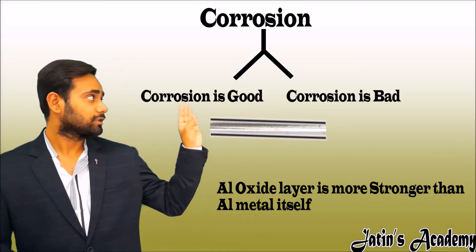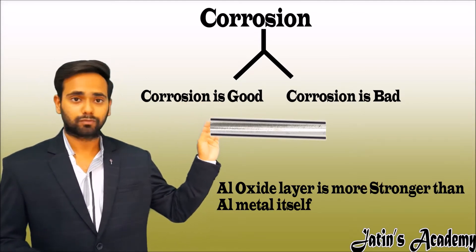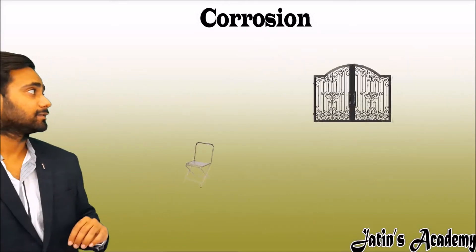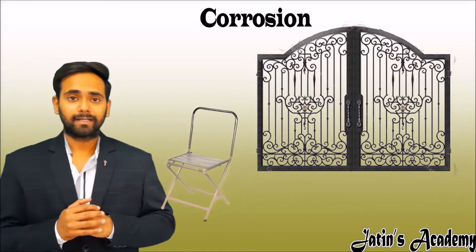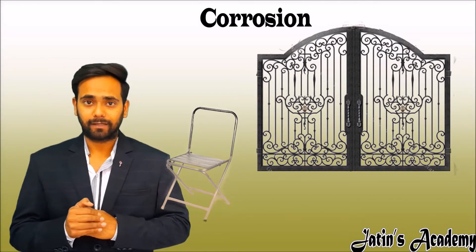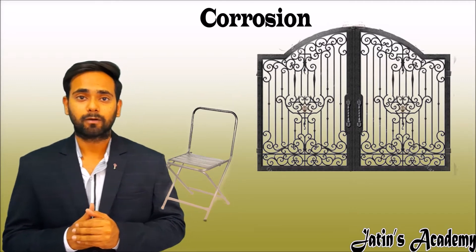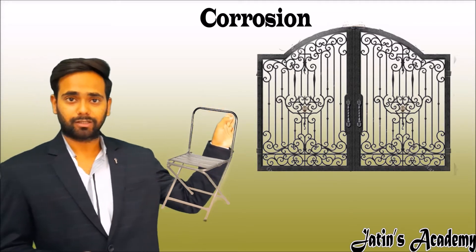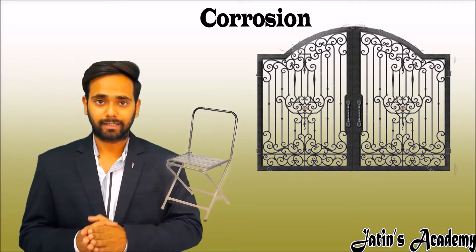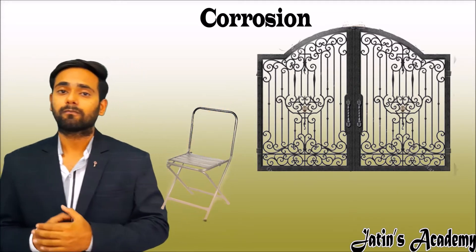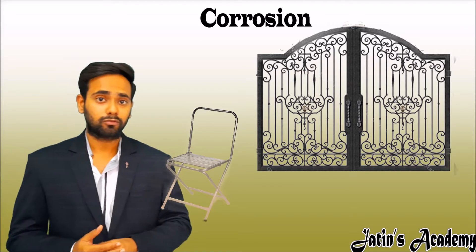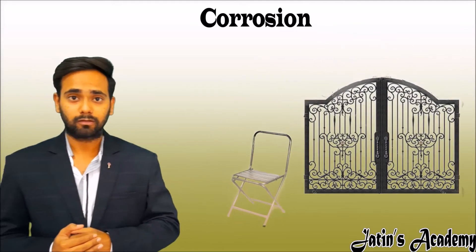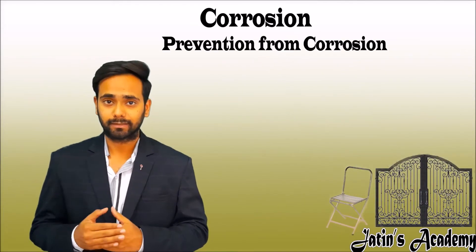So oxidation is also useful to some metals. Many articles we use in daily life are made of iron — our table, our chair, our main gate. These are all made from iron, and since the corrosion of iron is very harmful, how do we avoid this corrosion? There are some steps we have to follow in order to avoid corrosion.